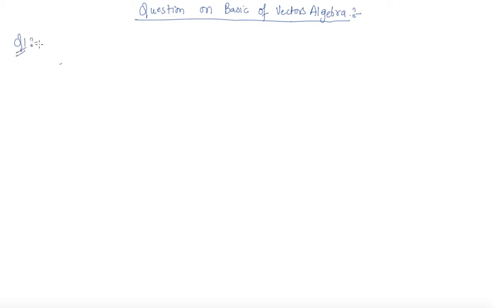So question number one I am writing down here. We need to represent graphically a displacement of 40 kilometers, 30 degrees west of south.